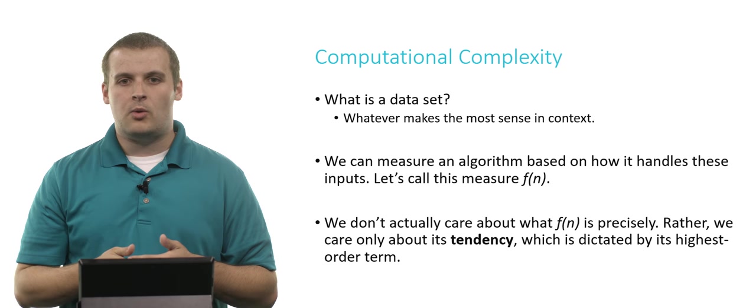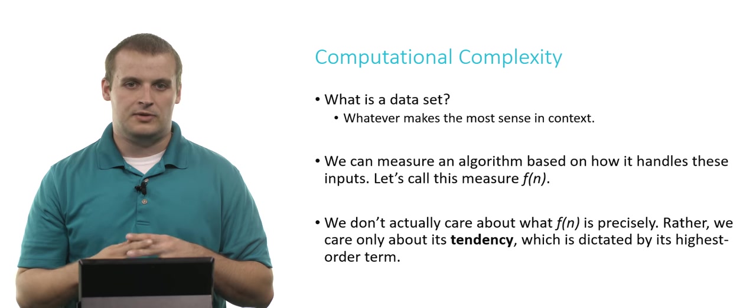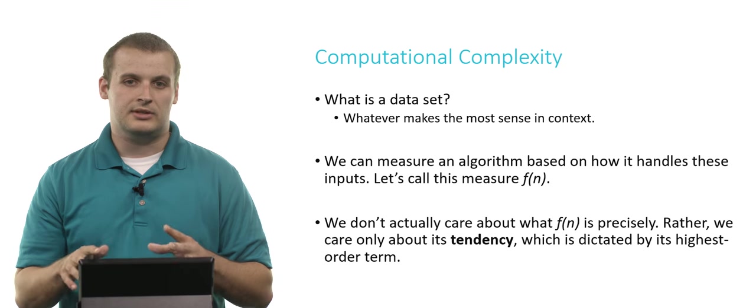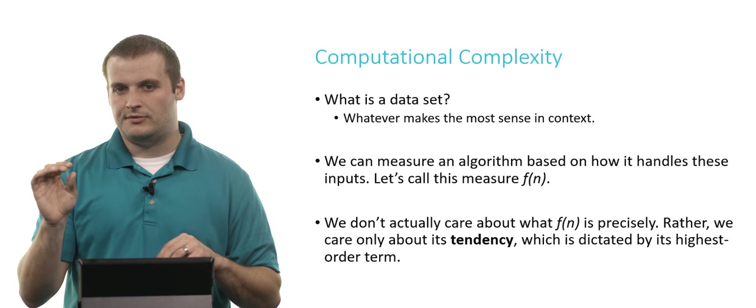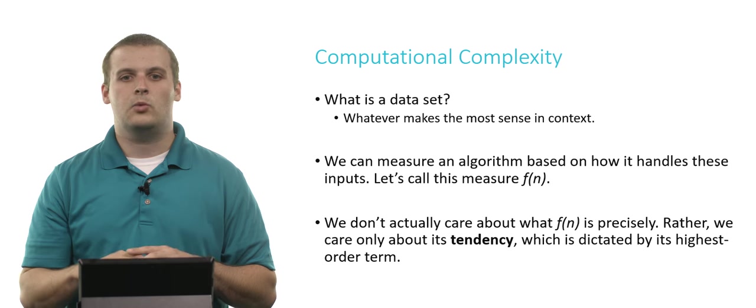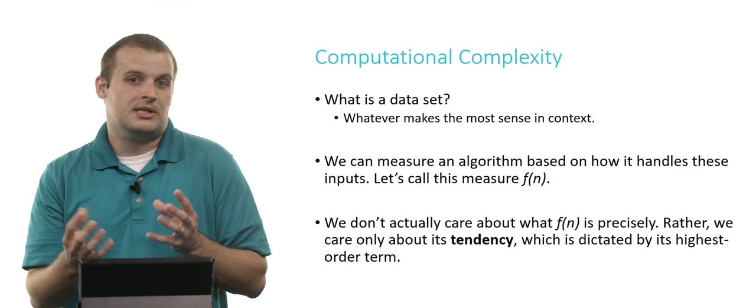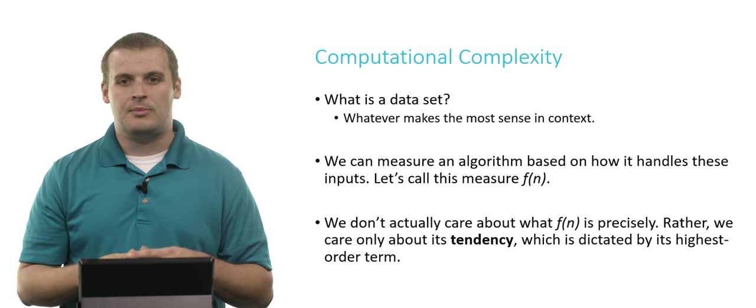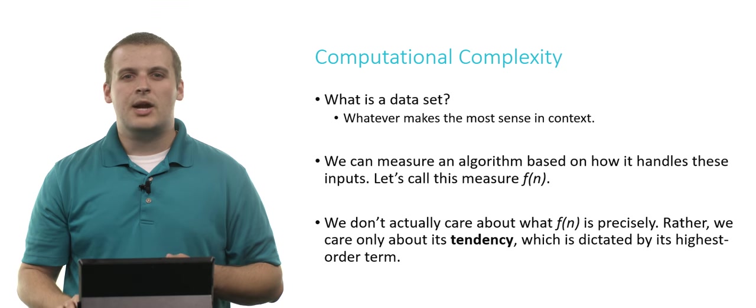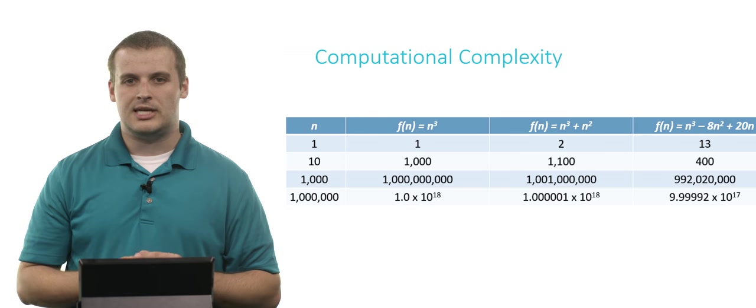Now, we actually don't care about what f of n is exactly. And in fact, we very rarely will, certainly will never in this class, dive into any really deep analysis of what f of n is. We're just going to talk about what f of n is approximately, or what it tends to. And the tendency of an algorithm is dictated by its highest order term. And we can see what I mean by that by taking a look at a more concrete example.